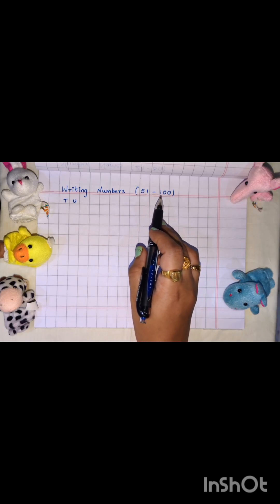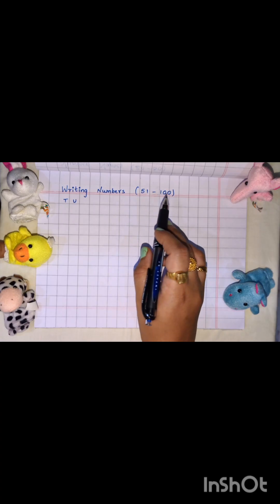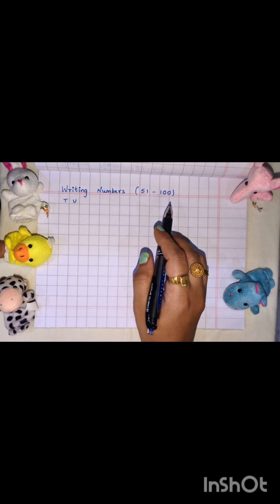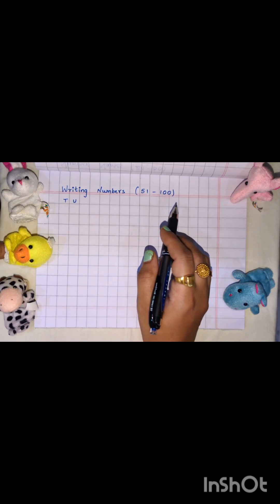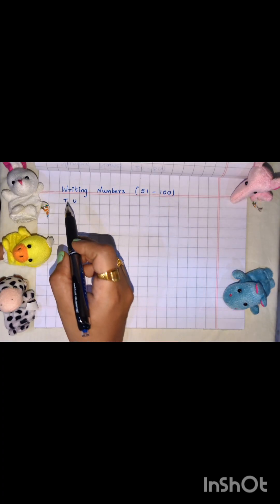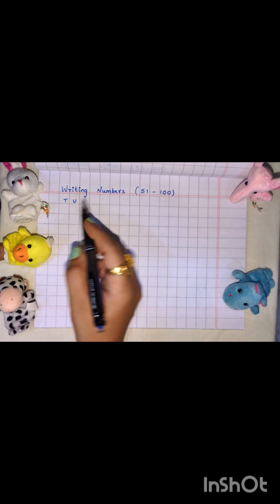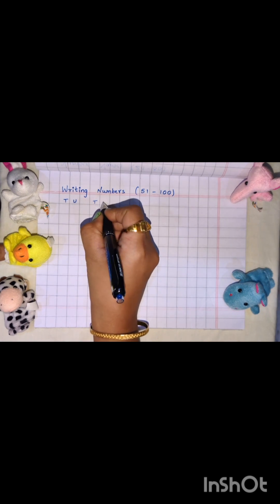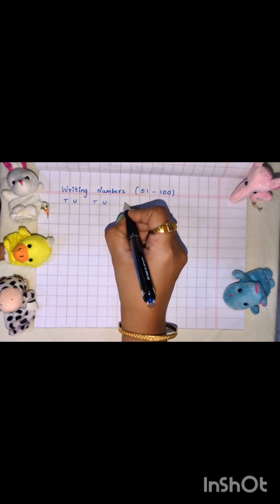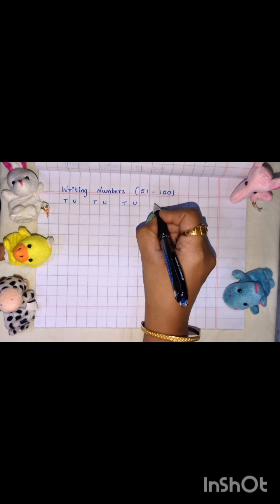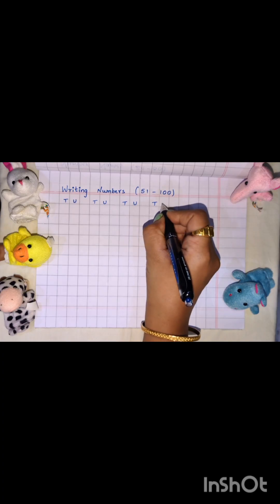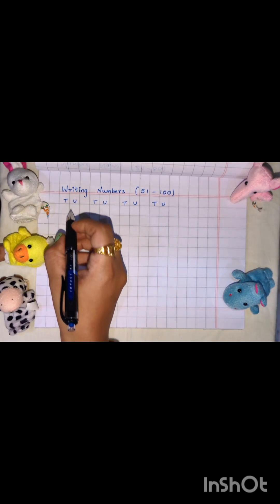Now, let's start counting and writing from 51 to 100. Are you ready? My little duck friend is ready too. Let's start. T-U, T-U, T-U, T-U. Let's start.